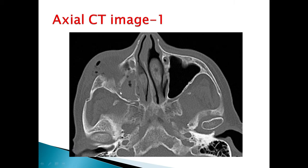The axial CT image shows fractures of the maxillary sinus walls with some soft tissue opacification. There is right periorbital soft tissue swelling and emphysema. Another finding is a minimally displaced fracture of the right zygomatic arch.